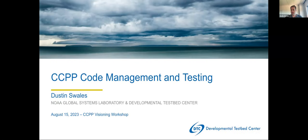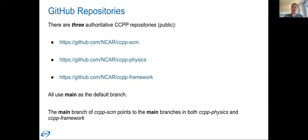So this section, for this next hour, we're going to talk about code management and testing that we have implemented and use throughout our authoritative repositories for the CCPP work. Just to bring us back to some of the things mentioned by Ligia and Grant earlier today about the different organizations of repositories we have for the physics organization. We have three main authoritative CCPP public repositories.